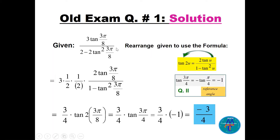We have to make the given expression exactly similar to the right side, then use the double angle. There is no factor of 3 in the formula, so I take the 3 outside. In the denominator there's a common factor, so I put one-half in the bracket — since in the formula there is a 2, I insert 2 and compensate with one-half (2 times one-half equals 1, so the question is unchanged). Now we have 2·tan(3π/8) divided by 1 minus tan²(3π/8), which is tan(2u) with u = 3π/8.